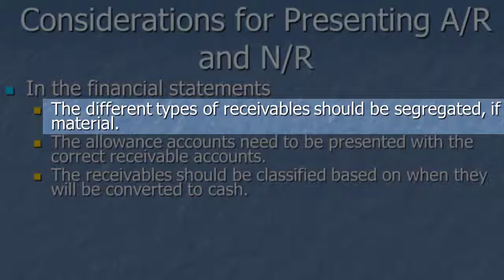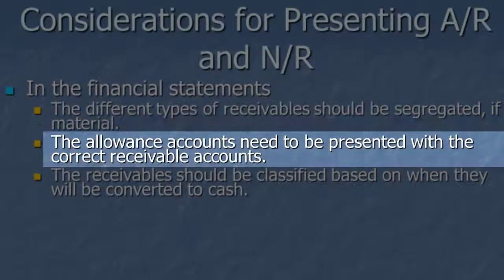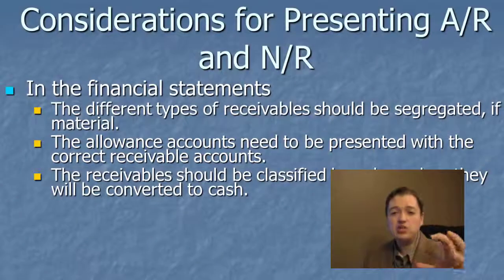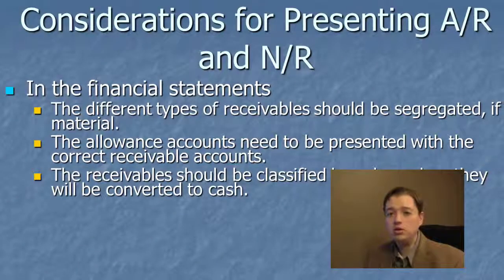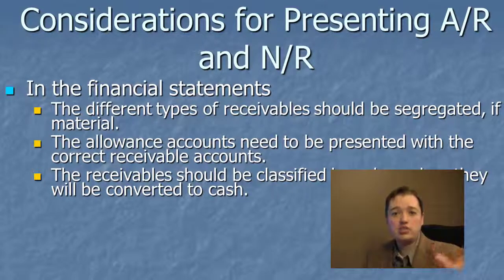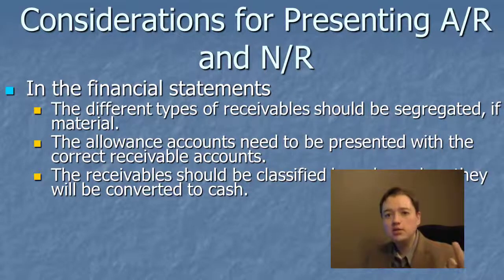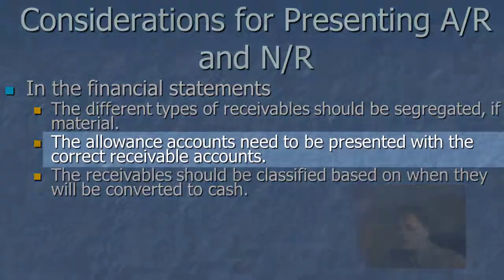But if the numbers are similar in size and it might make a difference to investors, then you need to break them out so investors know what's going on. In addition, the allowance accounts need to be placed with the account they apply to. You don't want accounts receivable and notes receivable with all allowances lumped together. You want accounts receivable paired with the allowance for bad debts for accounts receivable, and notes receivable paired with the allowance for bad debts for notes receivable.